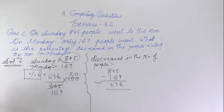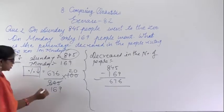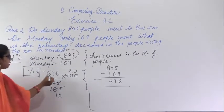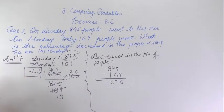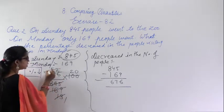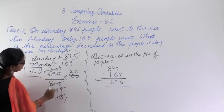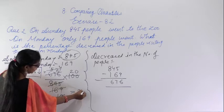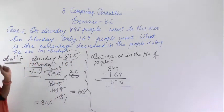Since 169 is 13 squared, we cancel by 13. After cancellation and simplification, multiplying gives 80%. So the percentage decrease is 80%. You had to find out what percent decrease there was in the number of people visiting the zoo on Monday — the answer is 80%.